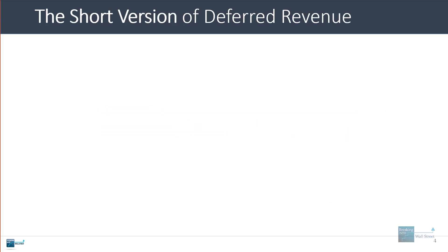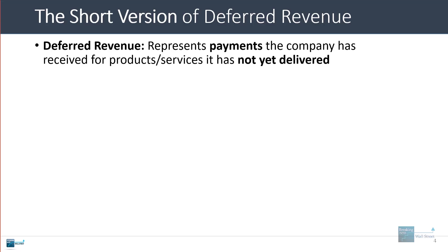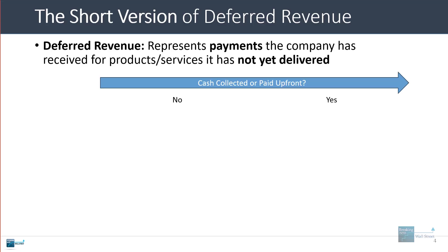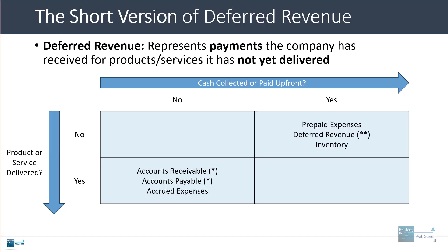Here's the short version of deferred revenue. Deferred revenue is used for payments the company has received for products and services it has not yet delivered. If you think about this in terms of a two-by-two matrix, you can have cash collected or paid up front at the top, and on the side you can have whether or not the product or service has been delivered.